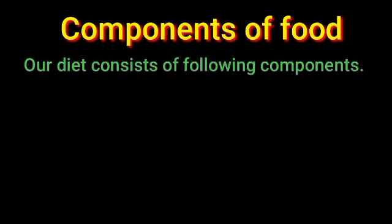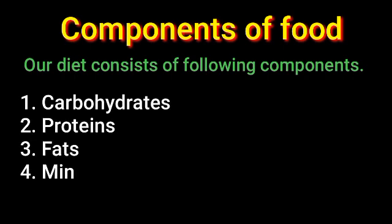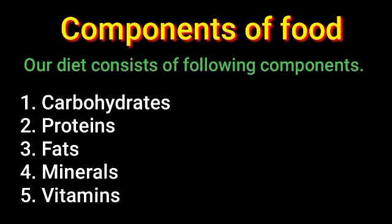Our diet consists of the following components: one, carbohydrates; two, proteins; three, fats; four, minerals; and five, vitamins. These five are the main components of food in our diet.